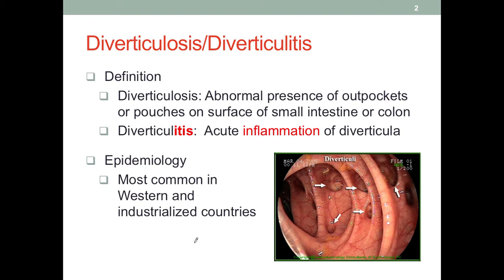We also have diverticulitis, which involves the suffix '-itis' that we've seen before. This indicates acute inflammation. Whenever we see this ending, it indicates inflammation — for example, bronchitis or hepatitis are conditions involving inflammation, and the names all end in '-itis'.